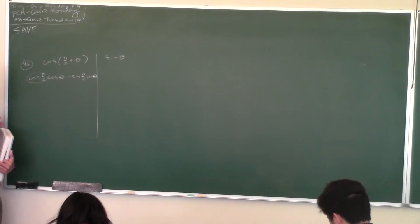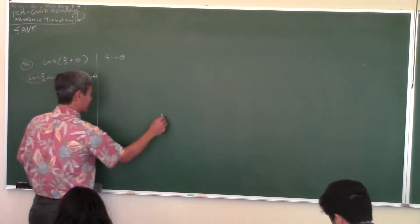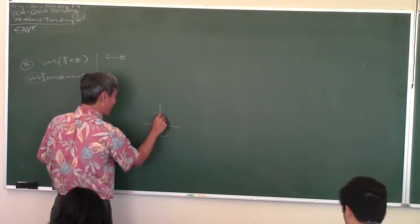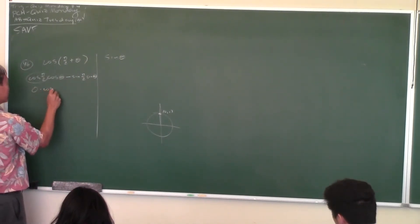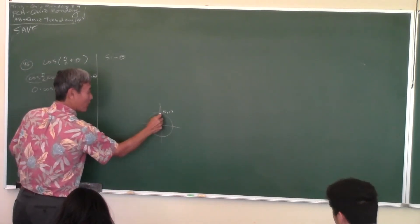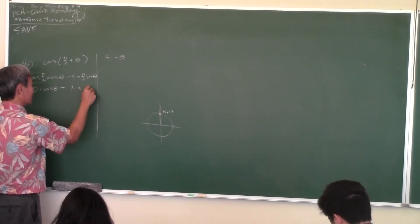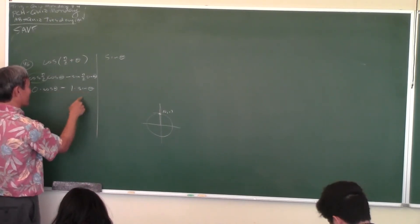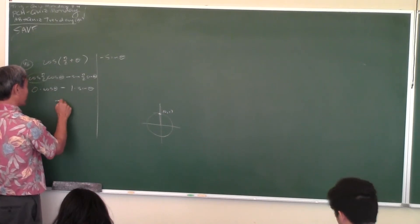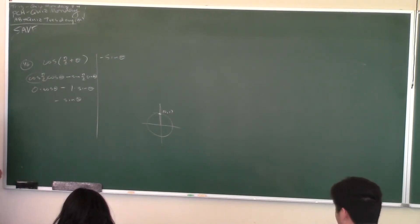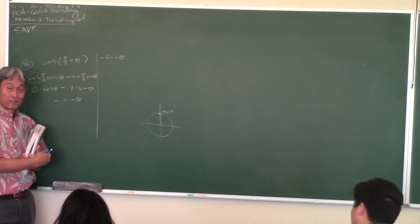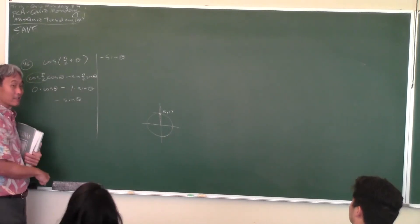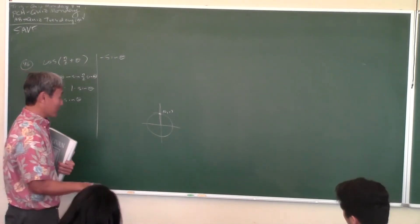What's the identity for cosine of something plus something? Cosine of the first times cosine of the second, minus sine of the first times sine of the second. Plugging in: cosine of π over 2 — let me draw the unit circle. π over 2 is right here; the coordinates are (0, 1). So cosine of π over 2 is 0, and sine of π over 2 is 1. So you get 0 times cosine θ minus 1 times sine θ, which equals negative sine θ. That's your answer — QED. The hardest part is memorizing the identity.